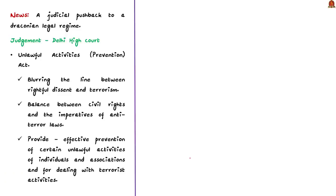Three activists were booked under UAPA in connection with the Delhi riots that broke out after protests following the Citizenship Amendment Act. These three individuals remained in jail for over a year without trial for their alleged role. Recently, the Delhi High Court granted bail to these activists. The author considers this judgment an important judicial pushback to the authoritarian legal regime under UAPA.